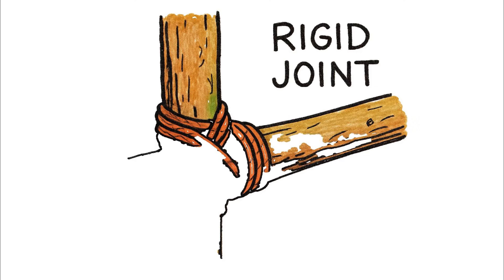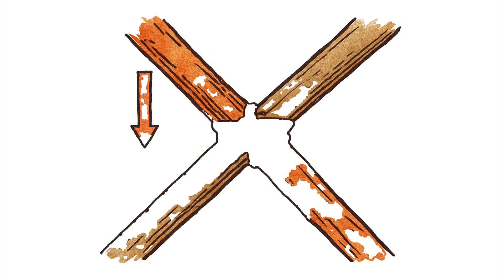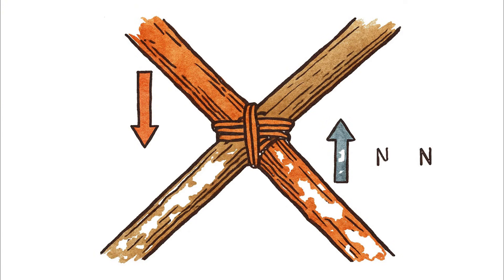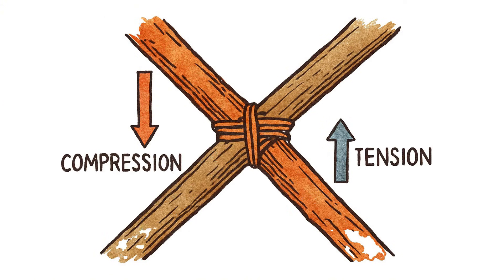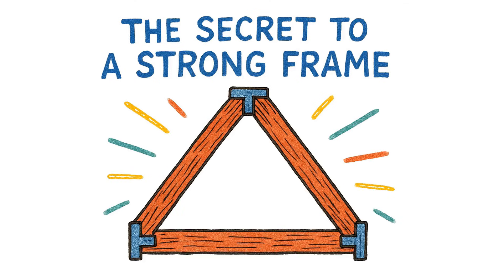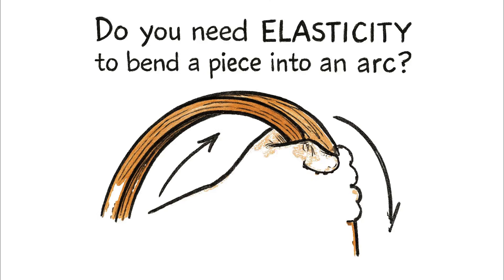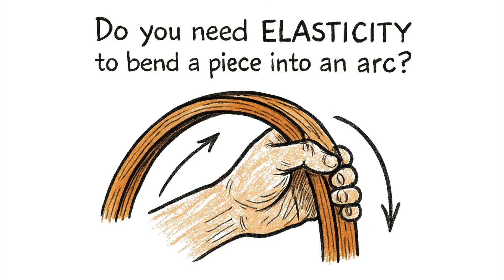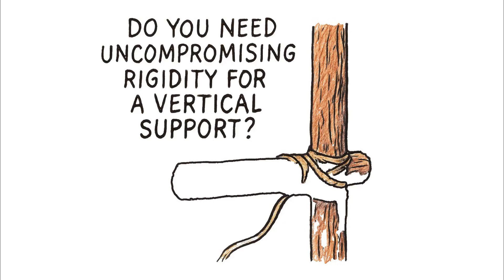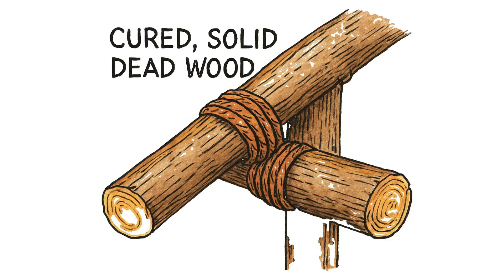Their job isn't just to hold two sticks together — it's to create a rigid joint that forbids rotation. By locking that angle in place, you force the loads to travel cleanly along the length of each branch, keeping them in either pure compression or pure tension. This is the secret to a strong frame. The material choice itself is a calculation: need elasticity to bend a piece into an arc? Use flexible live wood. Need uncompromising rigidity for a vertical support? Cured, solid dead wood is your answer.